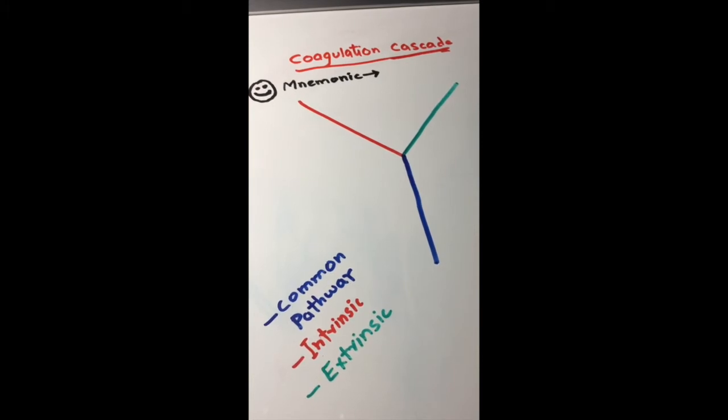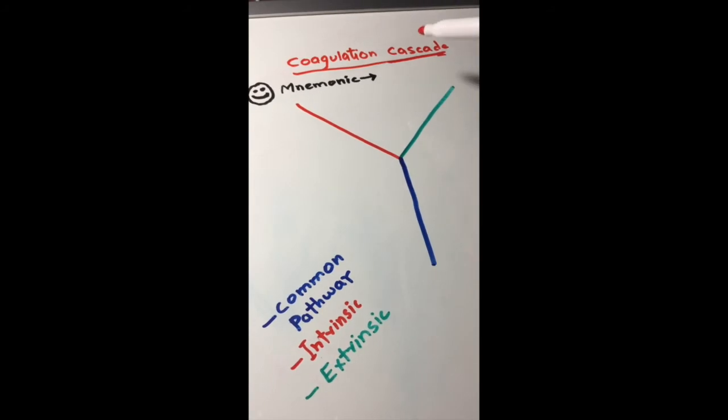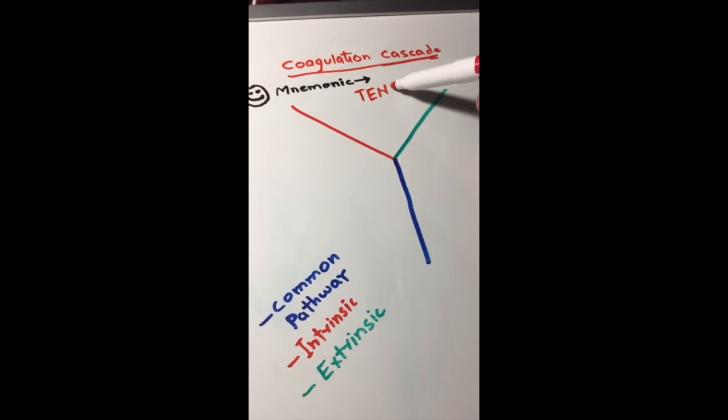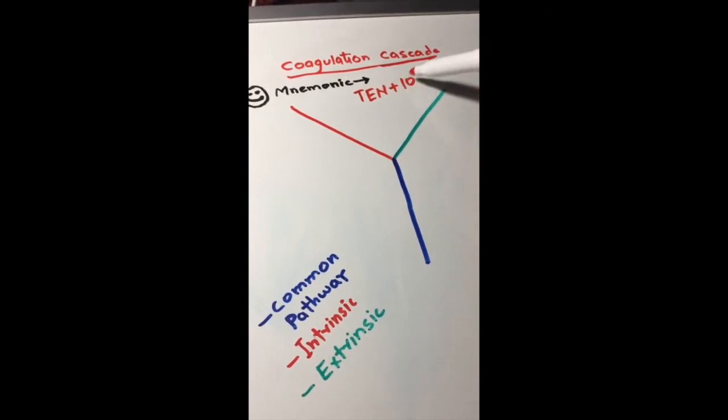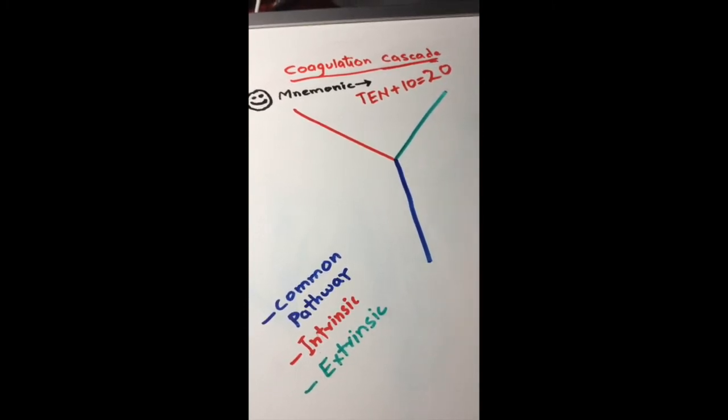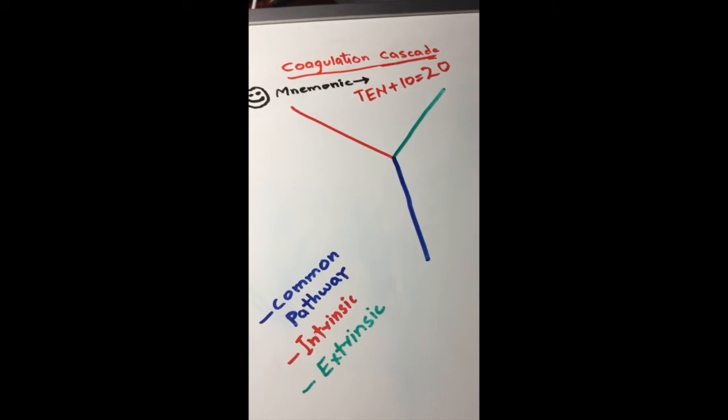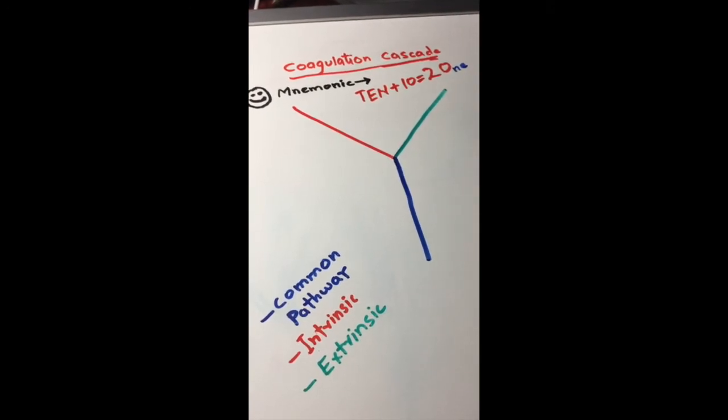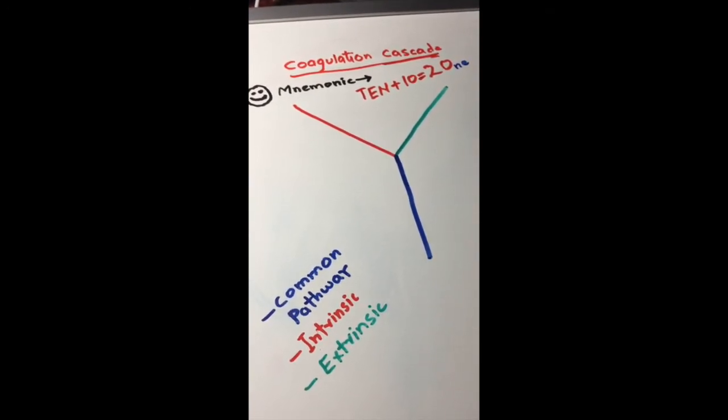Once you understand this, I'll talk about the mnemonic. The mnemonic I use is 10 plus 10 equals 20—no rocket science. I made a little change here: I made this 0 as 1.